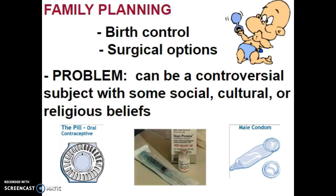Family planning is a way to control the human population. There is birth control, with different options available — male or female forms of birth control that will prevent pregnancy — as well as surgical options for males and females. The only problem with family planning is that it can be a very controversial subject, socially, culturally, or in the case of some religions, where the use of birth control or surgical options is highly unrecommended.